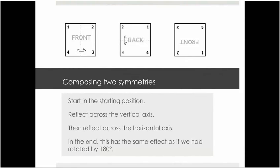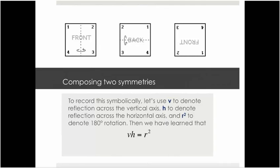This is what I was saying here. We start in the starting position, reflect across the vertical axis, then reflect across the horizontal axis. In the end, it has the same effect as if we had rotated by 180 degrees. Now, let's record this symbolically. So let's use little v, a lowercase v to denote reflection across the vertical axis. Let's use h to denote reflection across the horizontal axis. And let's use r squared to denote 180 degree rotation. What we've learned is, if you first do v, and then you do h, it's the same as if you had done r squared. So we're going to write an equation as if we were doing algebra. Simply vh equals r squared. In other words, doing the reflection across the vertical axis, and then across the horizontal axis, has the same result as the 180 degree rotation.